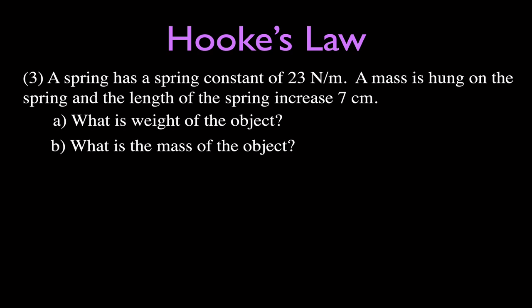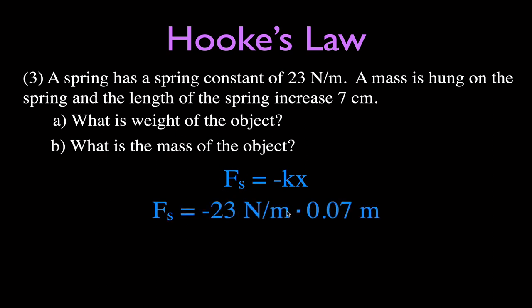Problem three: a spring has a spring constant of 23 newtons per meter. A mass is hung on it and the spring increases in length by 7 centimeters. What is the weight of that object? Using Hooke's Law, force equals k times x: 23 times 0.07 meters. Since 7 centimeters is less than a tenth of a meter, the force will be less than a tenth of 23 newtons — and we get 1.61 newtons.